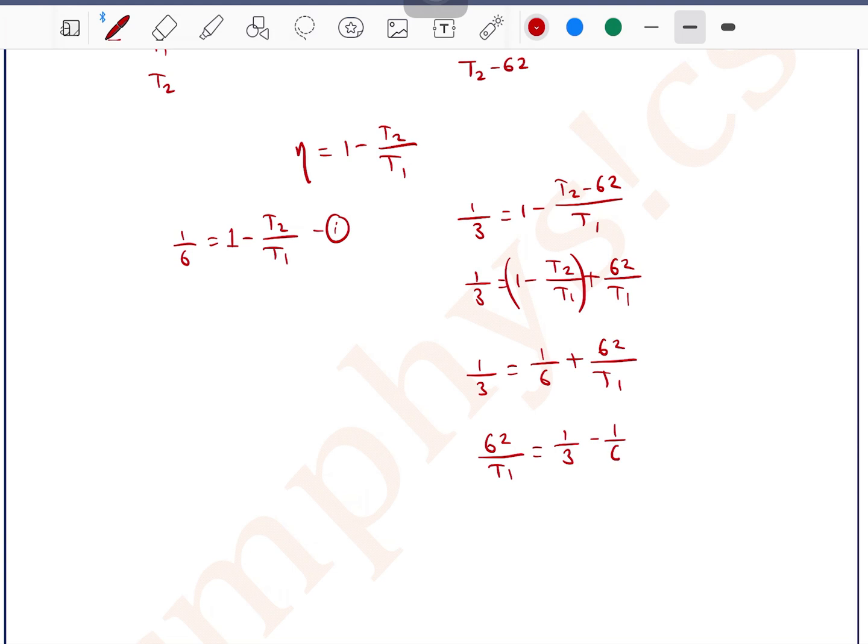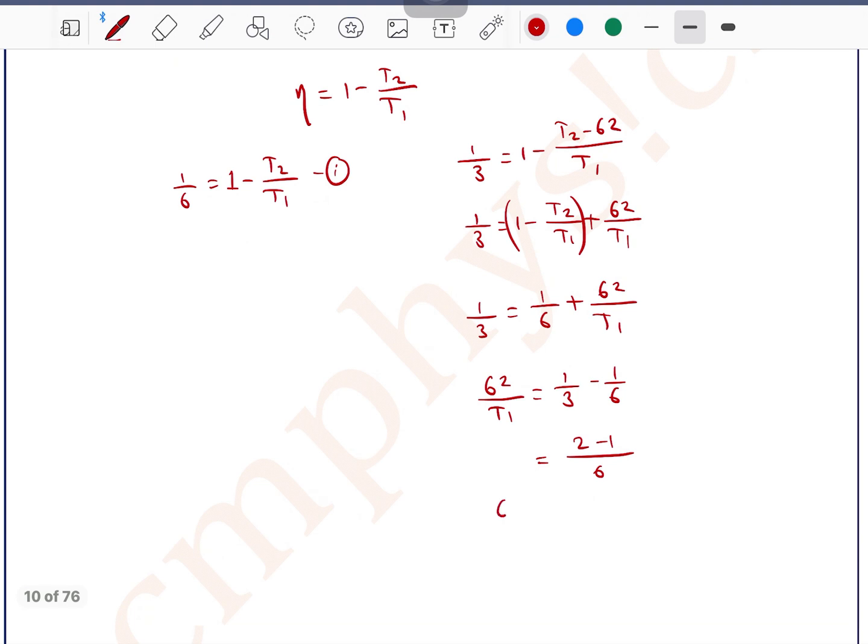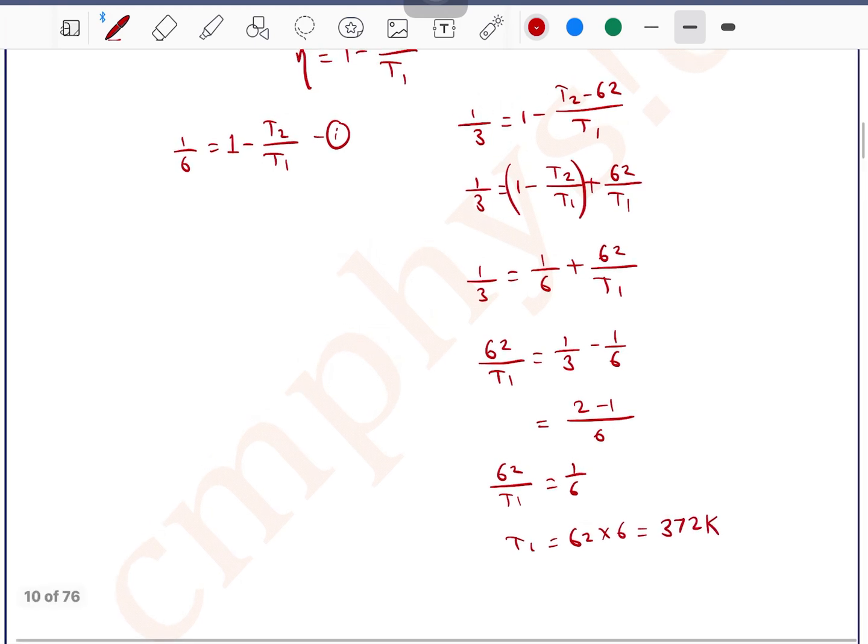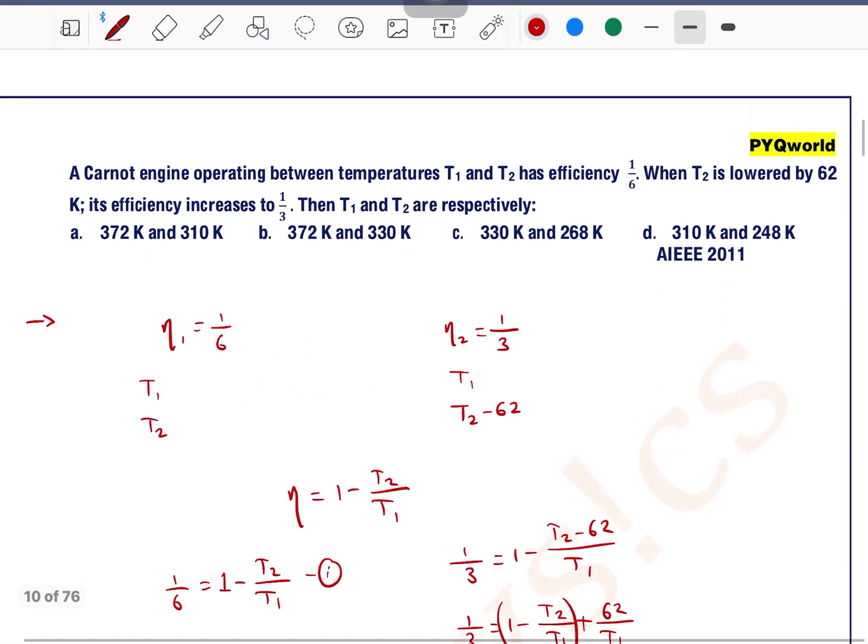So this can be written as 62 by T1 is equal to 1 by 3 minus 1 by 6. The LCM will be 6. This is 2 minus 1. 2 minus 1 is 1. So 62 by T1 is equal to 1 by 6. So T1 is equal to 62 into 6. This can be written as 360 plus 12 means 372 Kelvin. So T1 is 372 Kelvin.